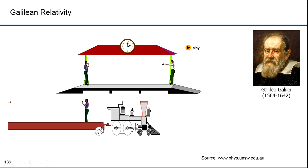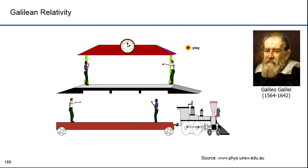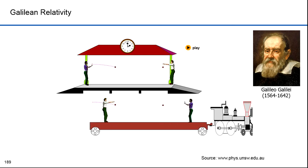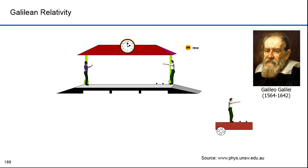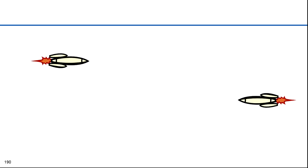According to Galilean relativity, if you conduct an experiment on a train moving at constant velocity, you will get the same results as if you were on the platform. A ball dropped will go straight down; a ball thrown will travel over a distance. If both frames are inertial reference frames — meaning neither are accelerating — there is no preferred frame of reference. An observer on the platform will see the train moving; an observer on the train will see the platform moving.